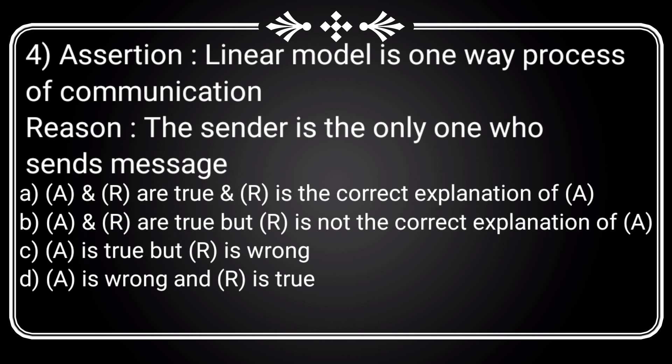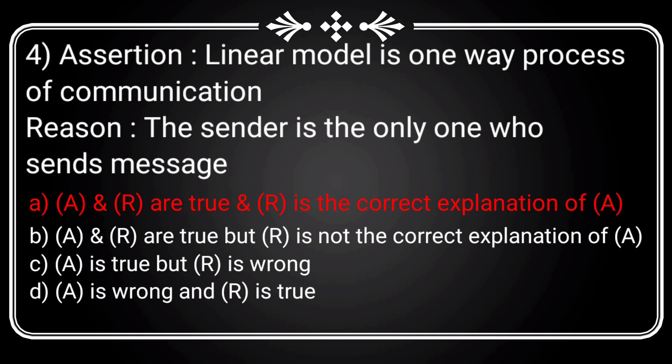Students, now we can try to solve this assertion reasoning question. Assertion: Linear model is one way process of communication. Reason: The sender is the only one who sends the message. Options are: A) A and R are true and R is the correct explanation of A, B) A and R are true but R is not the correct explanation of A, C) A is true but R is wrong, D) A is wrong and R is true. Answer is option A. A and R are true and R is the correct explanation of A.